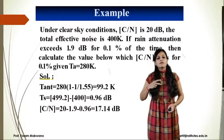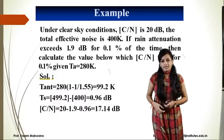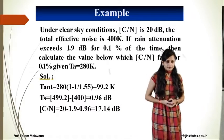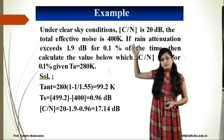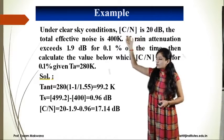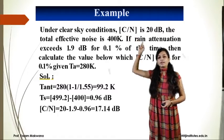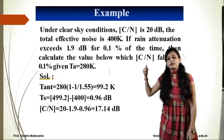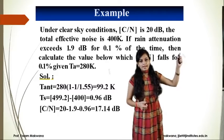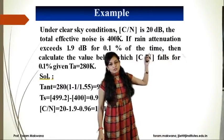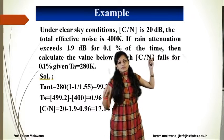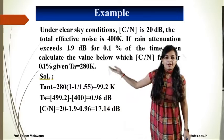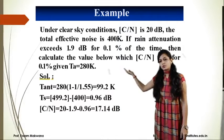We will see one example showing the effect of rain on carrier-to-noise power density ratio. Under clear sky conditions, the carrier-to-noise power density ratio is given as 20 dB. Total effective noise is given as 400 K. Rain attenuation is given as 1.9 dB for 0.1% of the time. Calculate the carrier-to-noise power for 0.1% where T_A equals 2280 Kelvin.